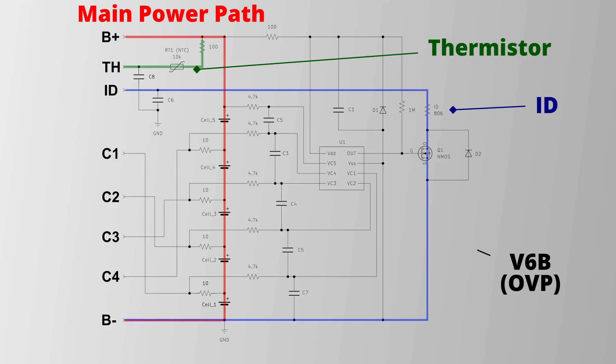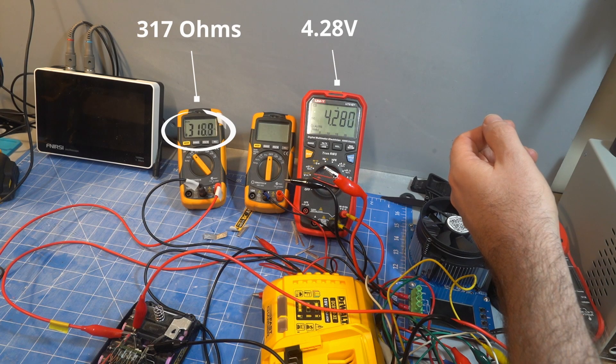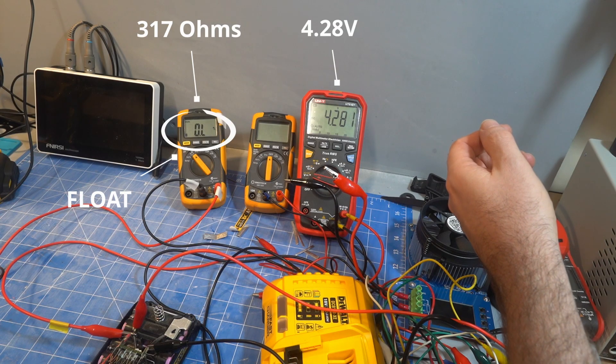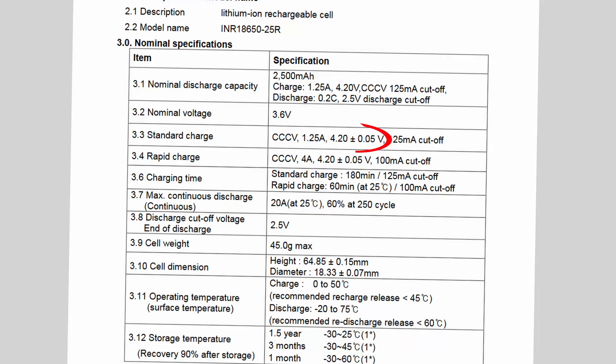This chip seems to be a custom chip labeled V6B. It's almost certainly an over voltage protection chip as taking any cell over 4.28 volts turns off this MOSFET which floats the ID resistor and stops the charger. 4.28 volts is pretty high as 4.25 volts is usually listed as the maximum.